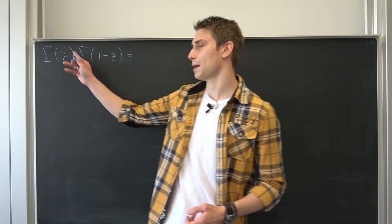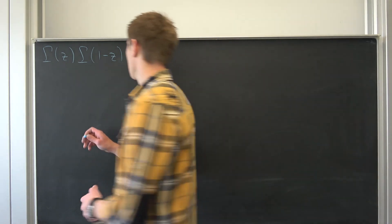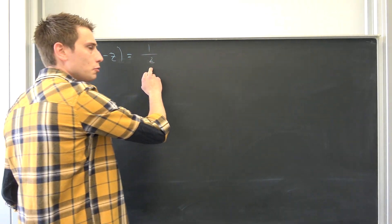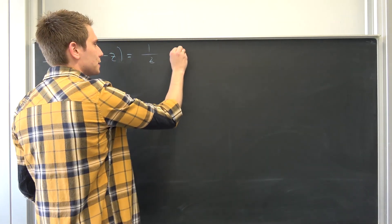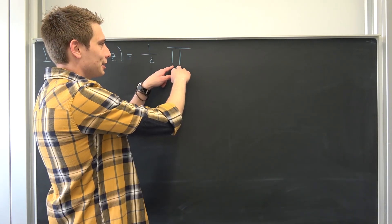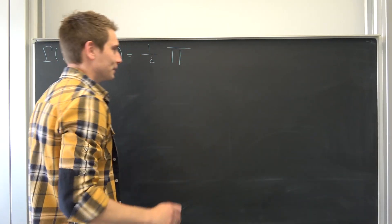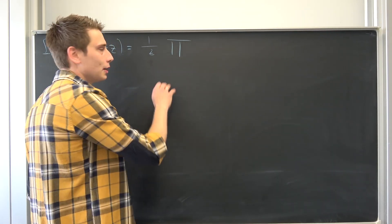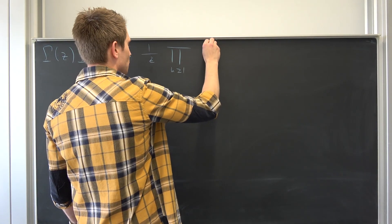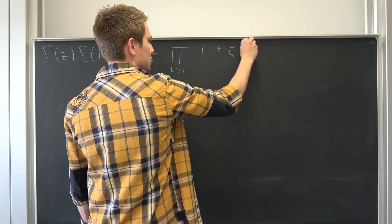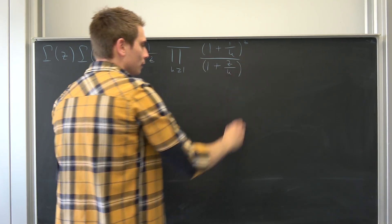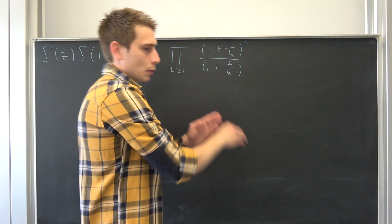Let us start off with gamma of z. The Euler definition of gamma of z is nothing but 1 over z times the infinite product — the infinity symbol — for k greater or equal to 1, of (1 + 1/k) to the z power over (1 + z/k).